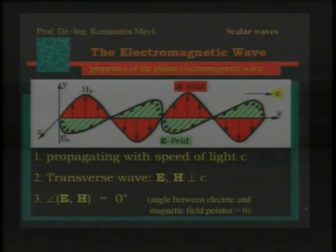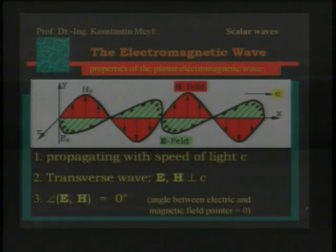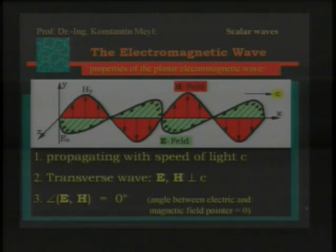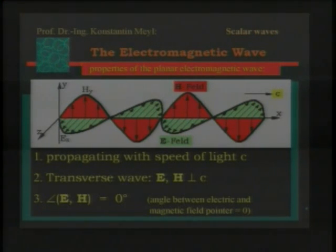The third point is very important: the phase angle between the electric and magnetic field pointer is zero. That's a special effect of electromagnetic waves. As you see here, if the one is zero, the other one is zero as well — they have just the same field angle.